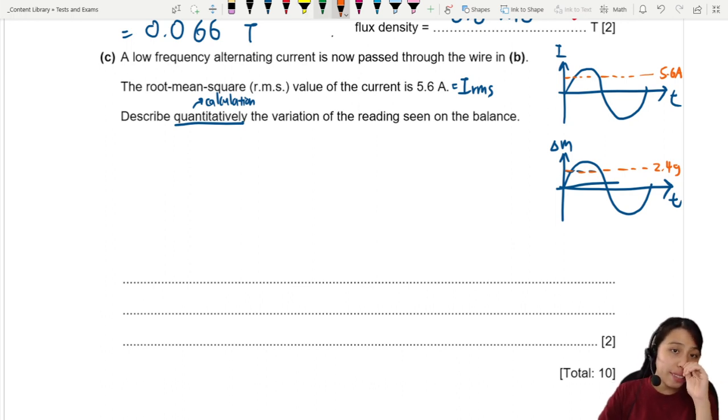But now you are oscillating. So you have a highest point and the lowest point. Highest current, lowest current. Highest mass reading, lowest mass reading. We need to find what that is. So this will be our lowest, highest. Highest, lowest.